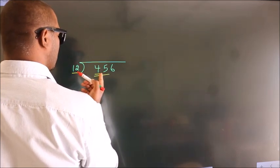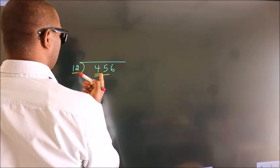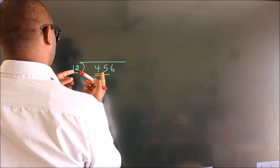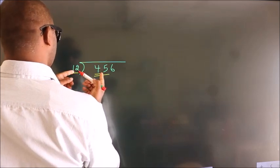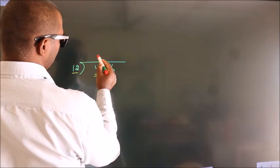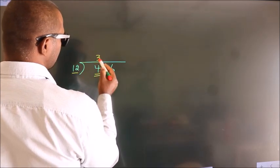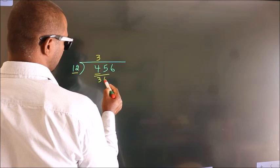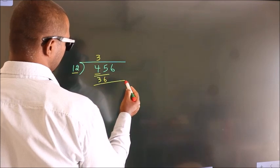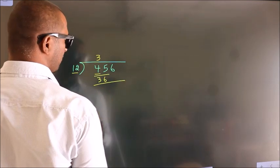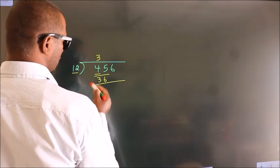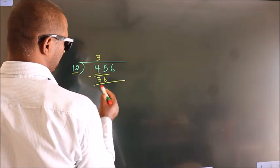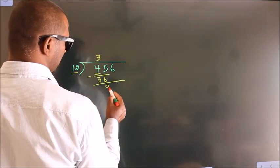A number close to 45 in the 12 table is 12 threes, 36. Now we should subtract. We get 9.